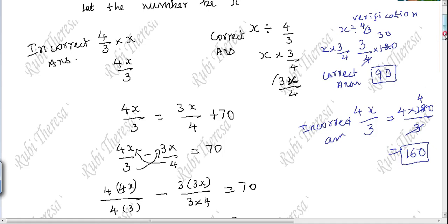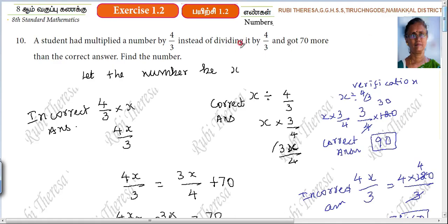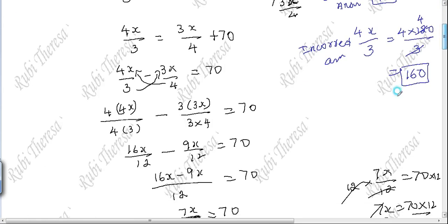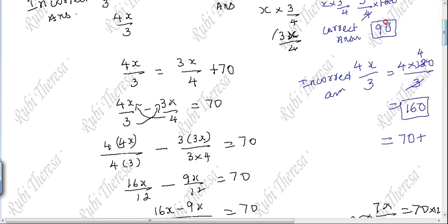What did they say? The student got 70 more than the correct answer. So, the correct answer is 90, and 90 plus 70 is 160. Do you follow? That is exactly what we equated.